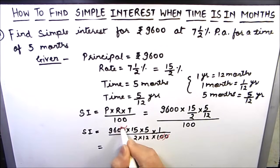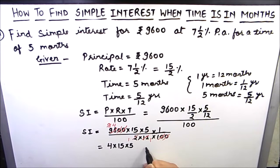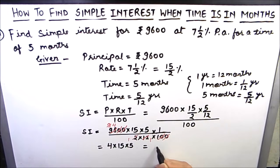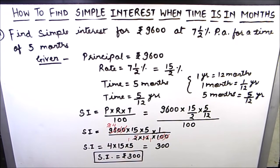The two zeros cancel with the two zeros. 12 divides into 96 giving 8, and 2 divides giving 4. In the numerator we are left with 4 times 15 times 5, which equals 4 times 15 is 60, and 60 times 5 is 300. So our simple interest comes out to be rupees 300. This is how we can find simple interest when time is given in months — we just need to convert months to years by dividing by 12.